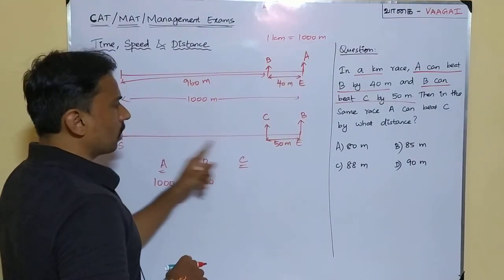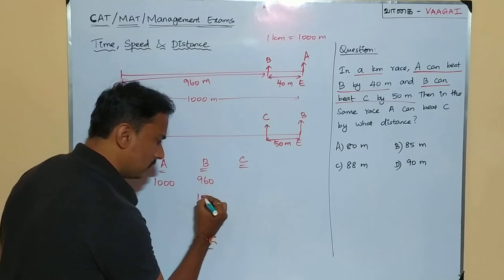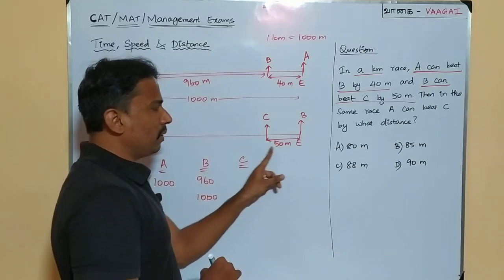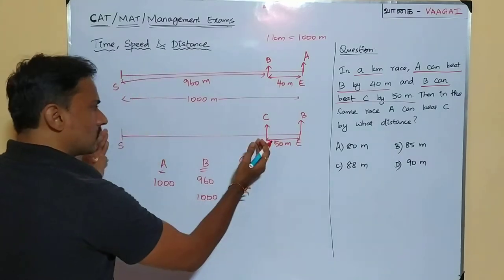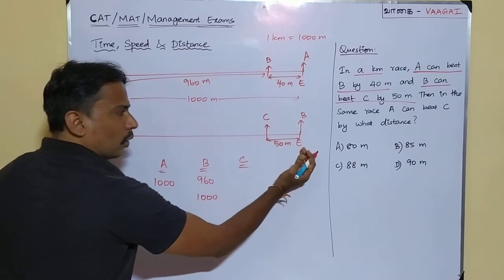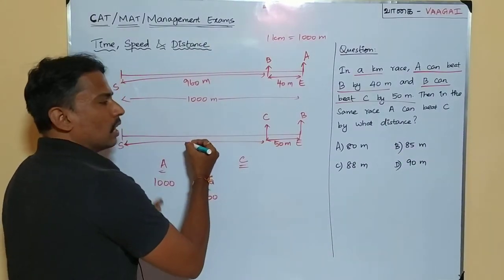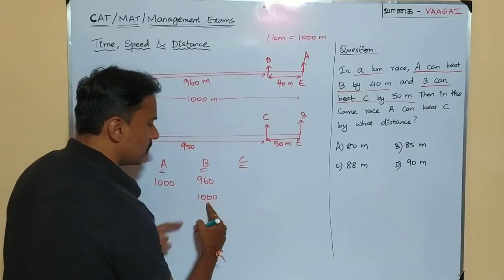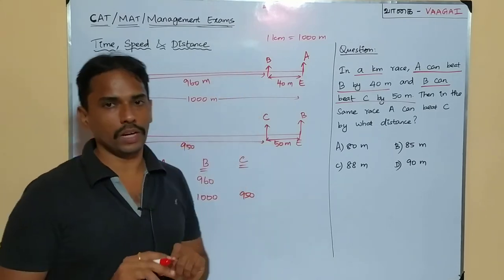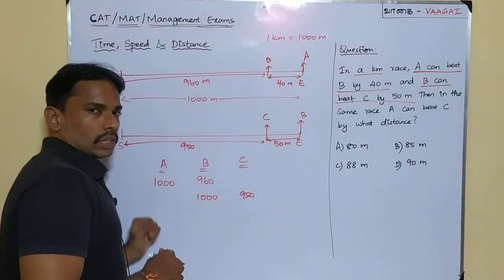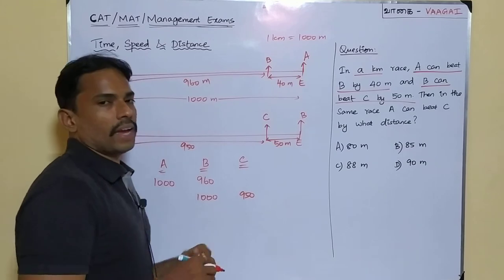Now the second condition — B and C. When B is finishing the race, that is when B is at 1000 meters, C is 50 meters before B. So the distance C has covered is 1000 minus 50, which is 950 meters. When B is at 1000 meters, C is at 950 meters. So: when A is at 1000m, B is at 960m; and when B is at 1000m, C is at 950m.